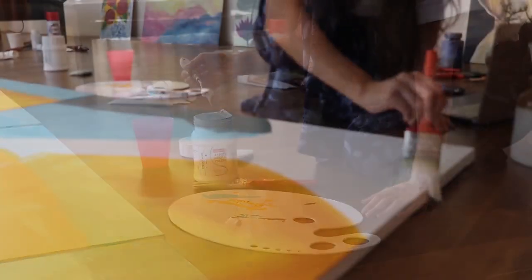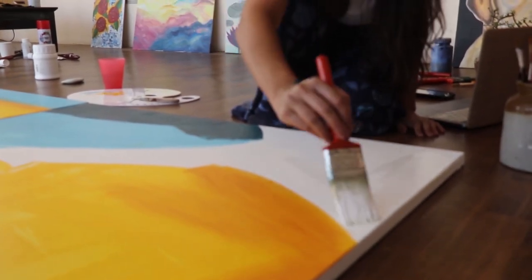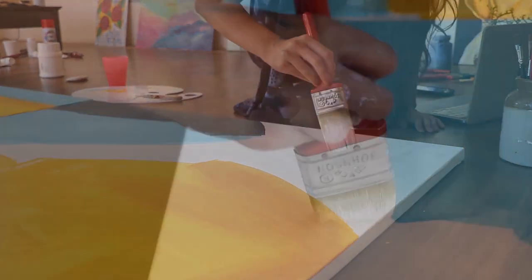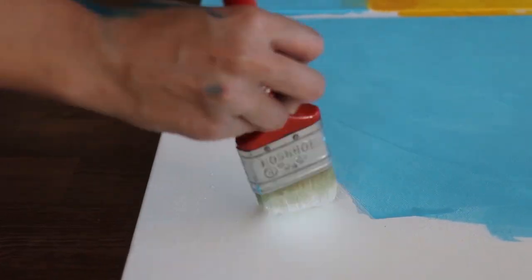I also applied a layer of titanium white on the negative spaces to draw more emphasis. This also helped me cover up any shabby edges of the other colors.